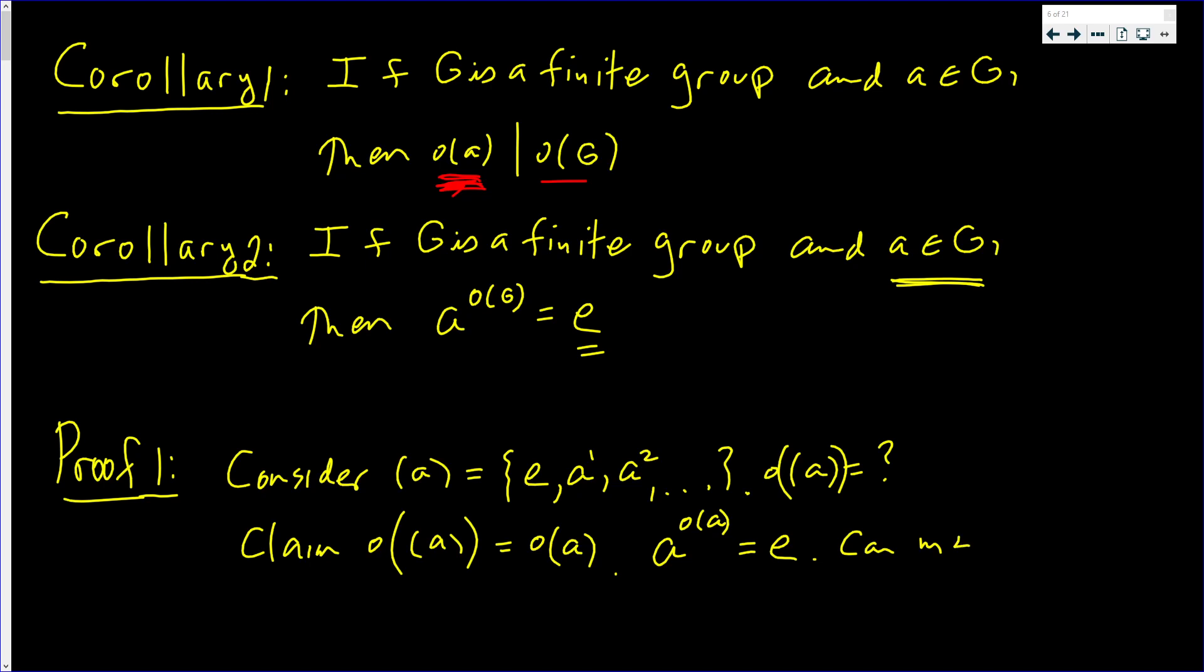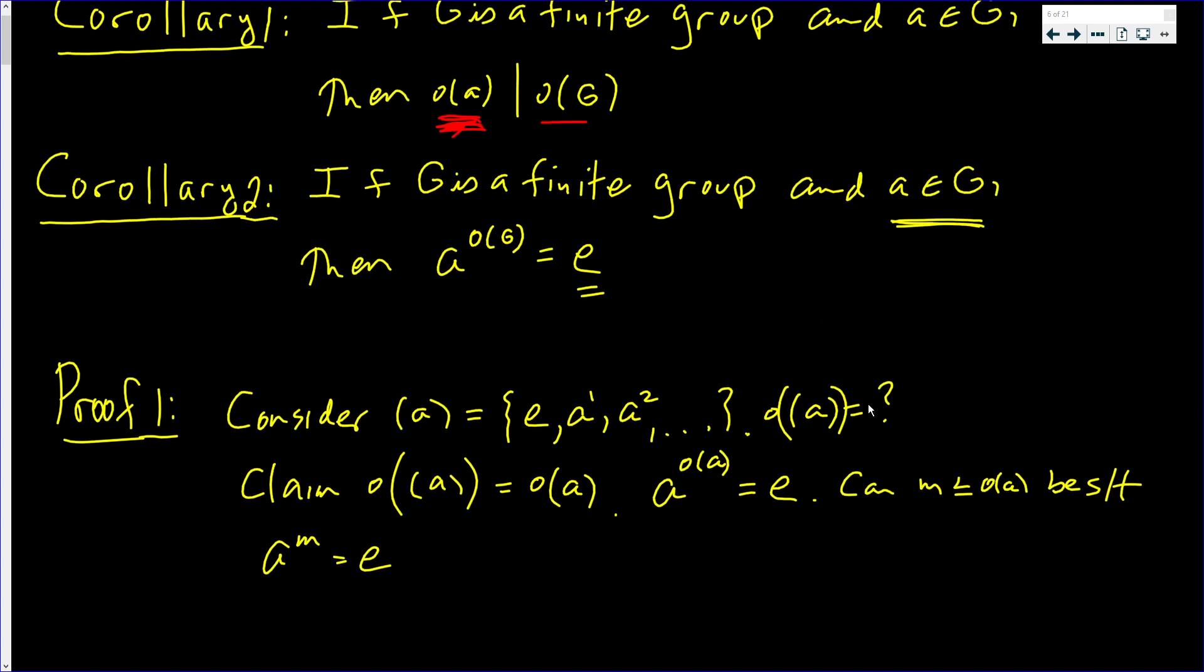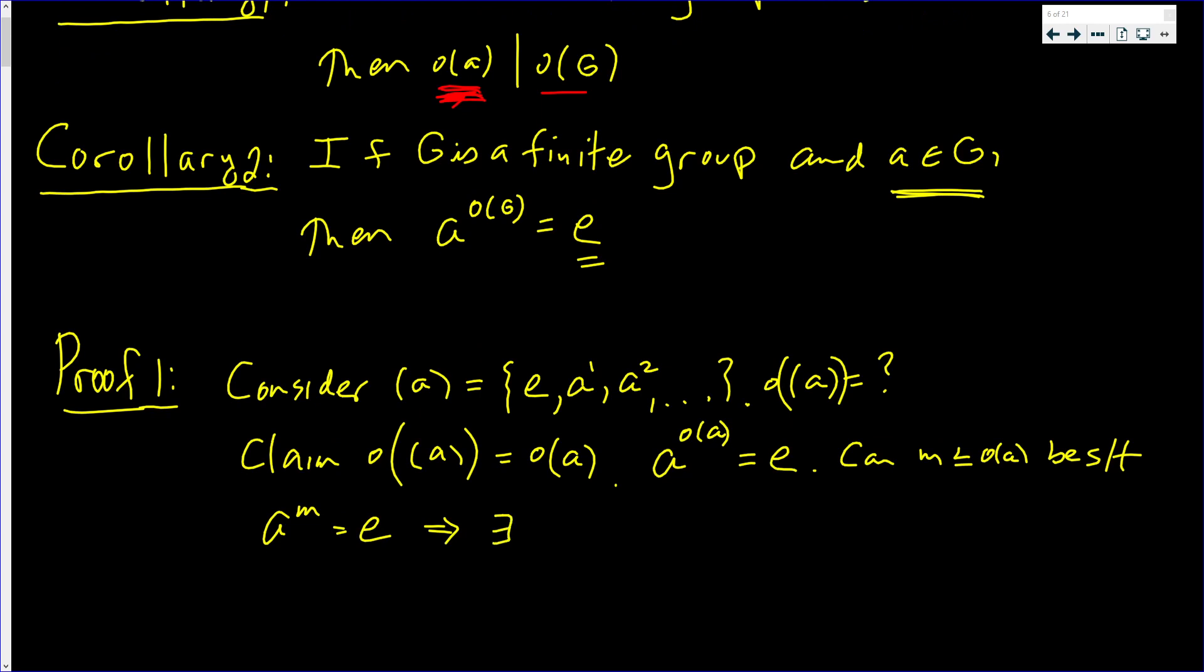Can M less than the order of A be such that A to the M is equal to E? Well that would imply that there exists I and J in the integers, say the positive integers, such that I and J are both in between 0 and the order of A. And let's even say that I is less than J, just to basically say that they're different.